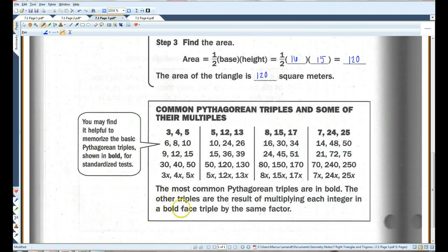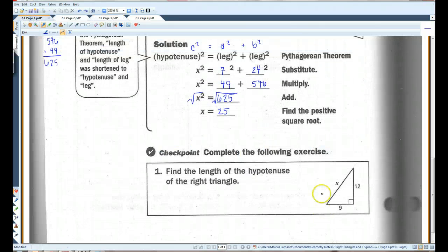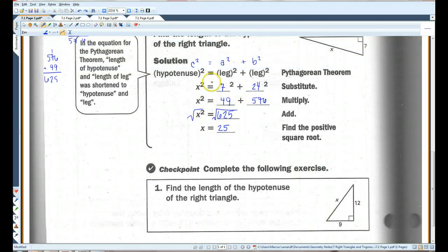These are Pythagorean triples. I highly recommend that you memorize these. If you memorize these four triples, it will make your life so much easier when you're dealing with the Pythagorean theorem, any type of right triangle. This is actually the one that we did in the example on page 1. I'll go back real quick. See? 7, 24, 25.